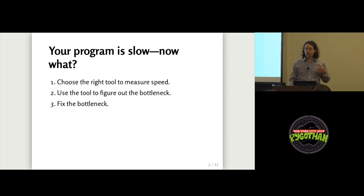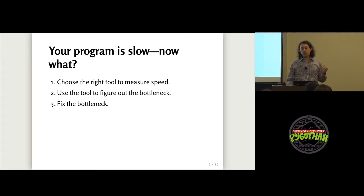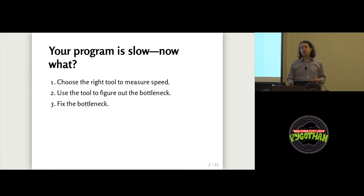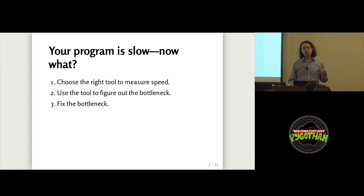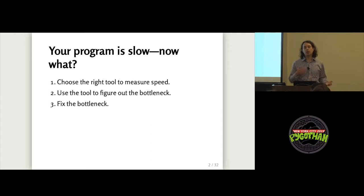So what do you do? The simplest description of the process is: you pick a tool that will help you measure where it's slow and where it's fast. You use that tool to figure out where the bottleneck is, and then once you know where the bottleneck is, you can say, okay, I know what the problem is and I can fix it. And for the rest of this talk, because it's only 25 minutes, I'm going to be focusing just on picking the right tool for figuring out your performance problem.